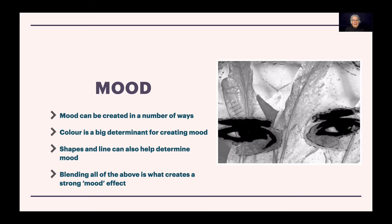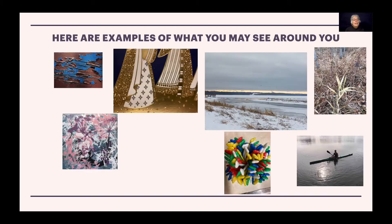Shape and line can also determine mood. Soft lines create a soft effect, a calming mood. Sharp lines can create excitement. Jagged lines can create irritation or, again, excitement. Blending all of those above is what creates a strong mood effect.